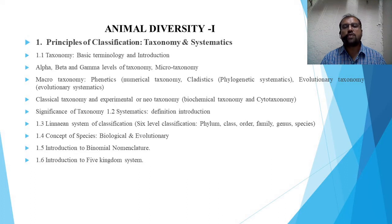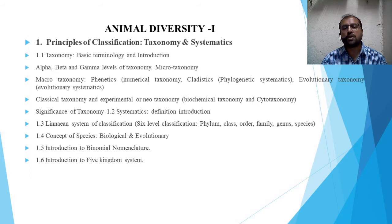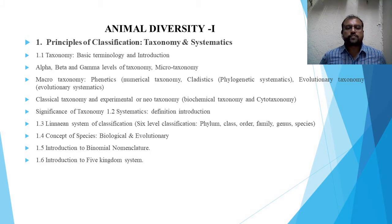In the first topic, the first sub-bit is taxonomy. In taxonomy we will study basic terminology and introduction — what are the different terms which come under this terminology and help for classification. This includes alpha, beta, and gamma levels of taxonomy; microtaxonomy; macrotaxonomy; phonetics including numerical taxonomy; cladistics; phylogenetic systematics; evolutionary taxonomy or evolutionary systematics; classical taxonomy; and experimental or neotaxonomy, which is biochemical taxonomy and cytotaxonomy. The last sub-bit is the significance of taxonomy.